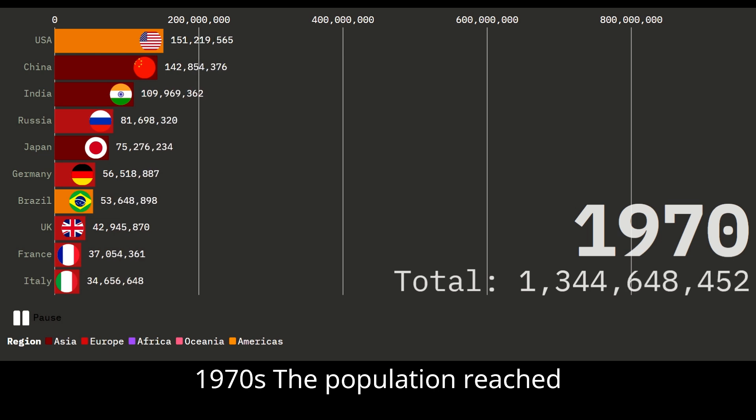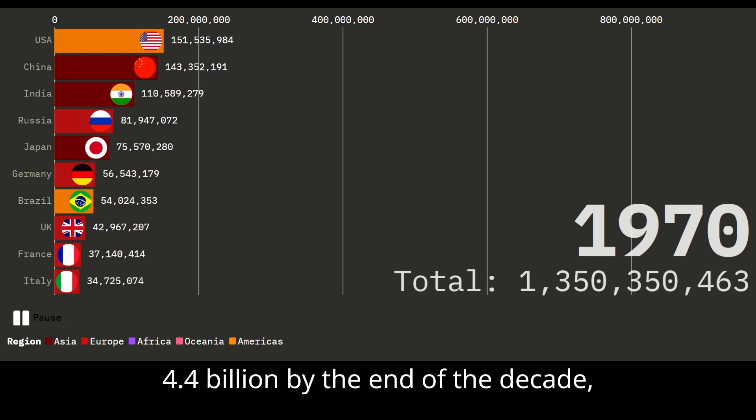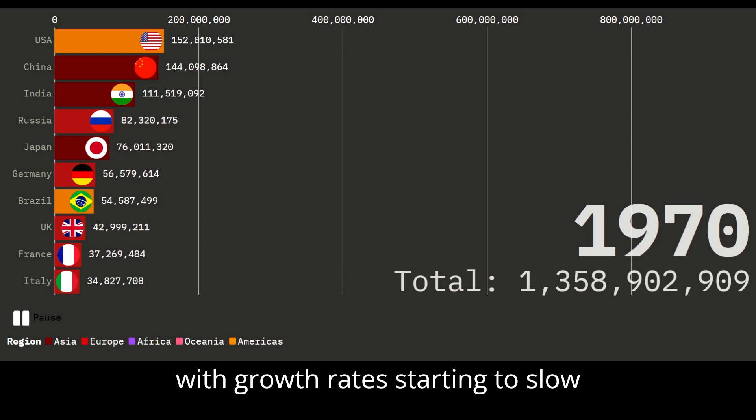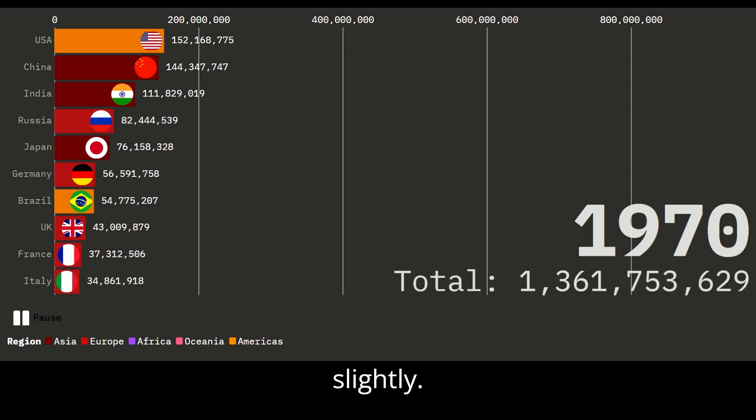In the 1970s, the population reached 4.4 billion by the end of the decade, with growth rates starting to slow slightly.